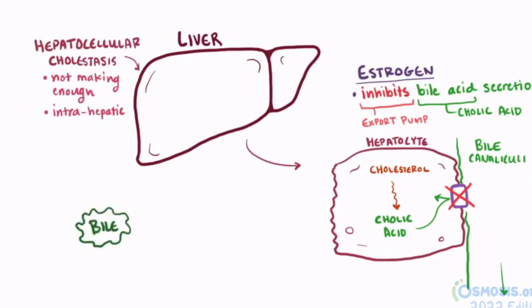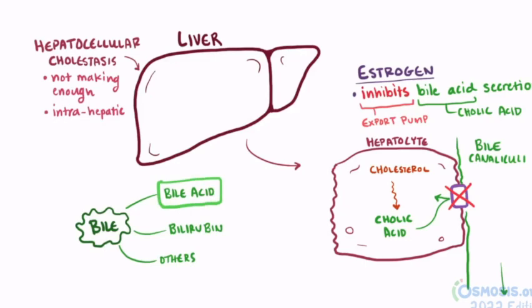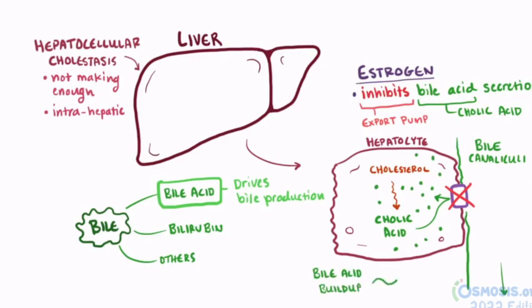Bile acids are just one component of bile — wouldn't the bile still be made, just without the bile acids? Well, production and secretion of bile acids is actually a major driving force for the synthesis of bile in the hepatocytes. So when the cells can't transport the bile acids and they start to build up inside the cell, this is basically a signal to down-regulate bile acid synthesis and excretion of bile altogether, which decreases the total amount of bile production.